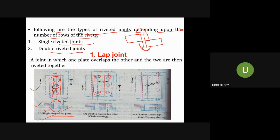A double riveted lap joint is also known as chain riveting. In this type, two rivets are used to join the two overlapping plates — this is the first rivet and this is the second rivet, creating two rows of rivets.